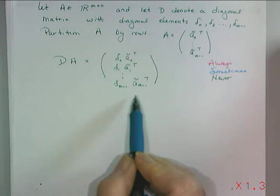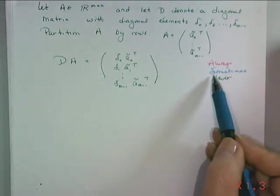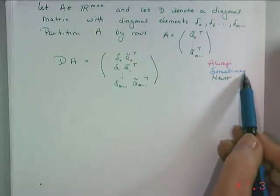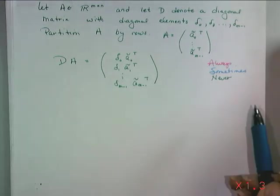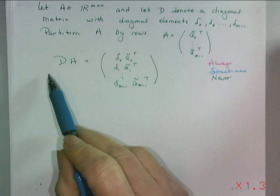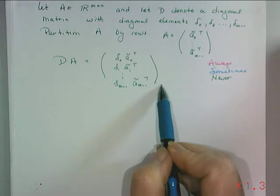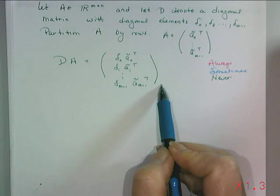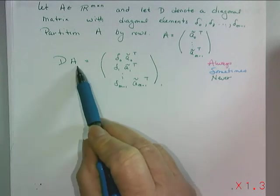So I think that this is, well we know it's at least sometimes true if we look at some of the problems we've already looked at, so I'm hoping it's always true because then this will give us a nice shortcut way of computing if we did need to compute a diagonal times the matrix A by hand.